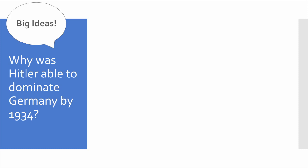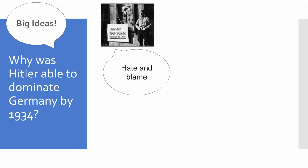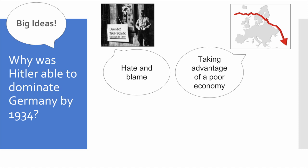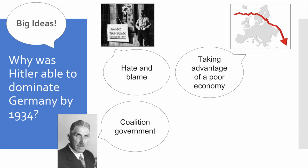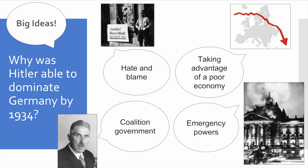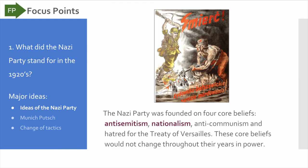The Nazi Party is, first and foremost, a party that is based on hate and blaming others for why Germany was in the condition that it was. The Nazi Party comes to prominence mainly through the fact that Germany suffers from a poor economy. And when people suffer in a poor economy, they look to more extreme solutions to fix those problems. We're going to talk about coalition government again, and how coalition government essentially helps Hitler become chancellor. And last but not least, we're going to return to an idea from our first video, which is about emergency powers.